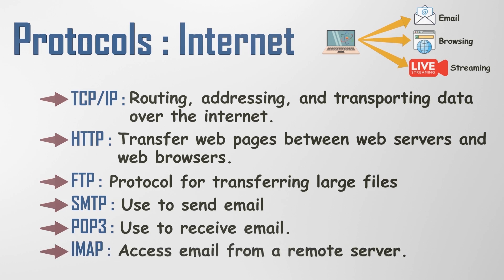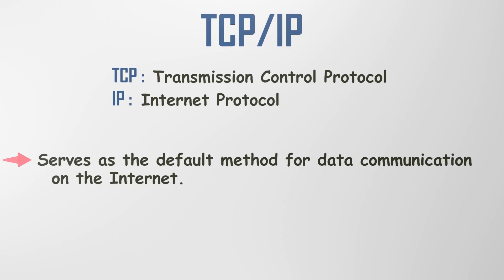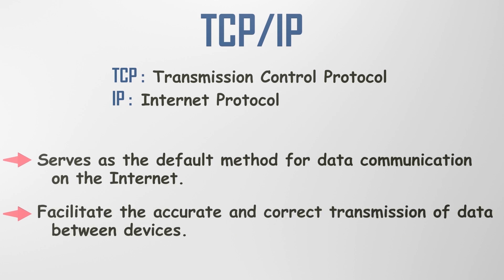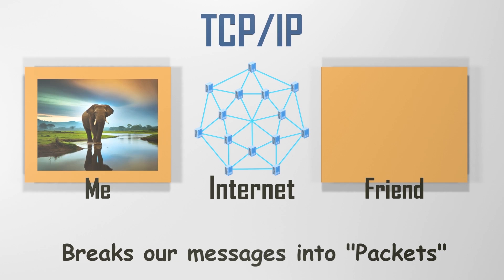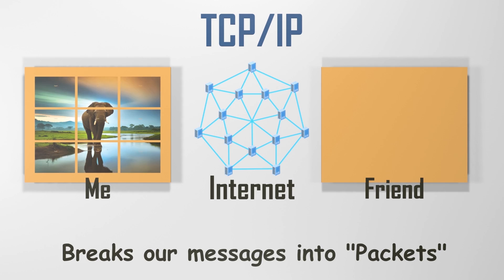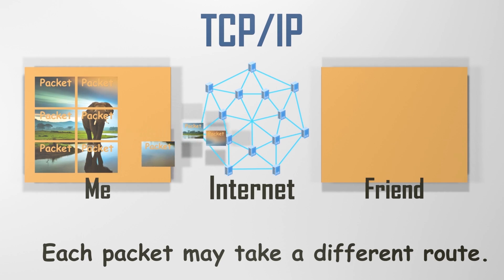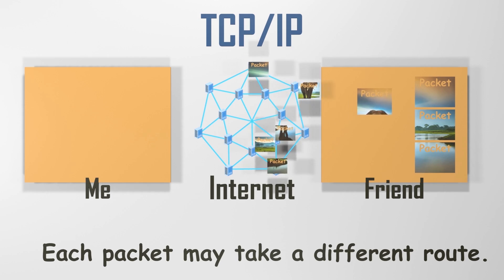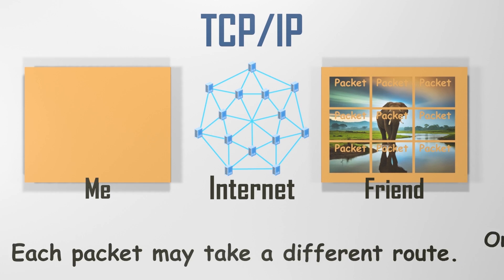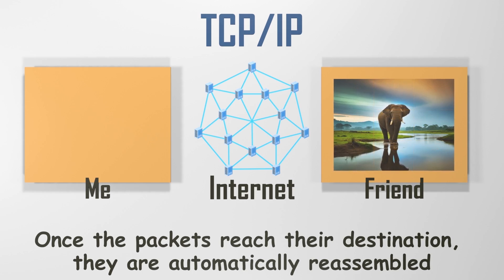Let's delve into the TCP/IP protocol. The TCP/IP model serves as the default method for data communication on the Internet. It was developed to facilitate the accurate and correct transmission of data between devices. Consider a scenario where we need to send an image to our friend across the world through the Internet. TCP breaks our messages into pieces to avoid the necessity of resending the entire message if issues arise during transmission. These individual pieces are referred to as packets. Each packet may take a different route between the source and destination computer, depending on whether the original route becomes congested or unavailable. Once the packets reach their destination, they are automatically reassembled, ensuring that the complete message — in this case, the image — is reconstructed correctly.